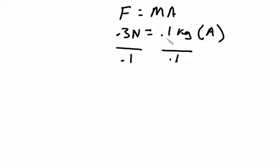We divide both sides of the equal sign by one-tenth. On the right side, one-tenth divided by one-tenth cancels out, and on the left side, three-tenths divided by one-tenth equals three, so it's three meters per second squared.